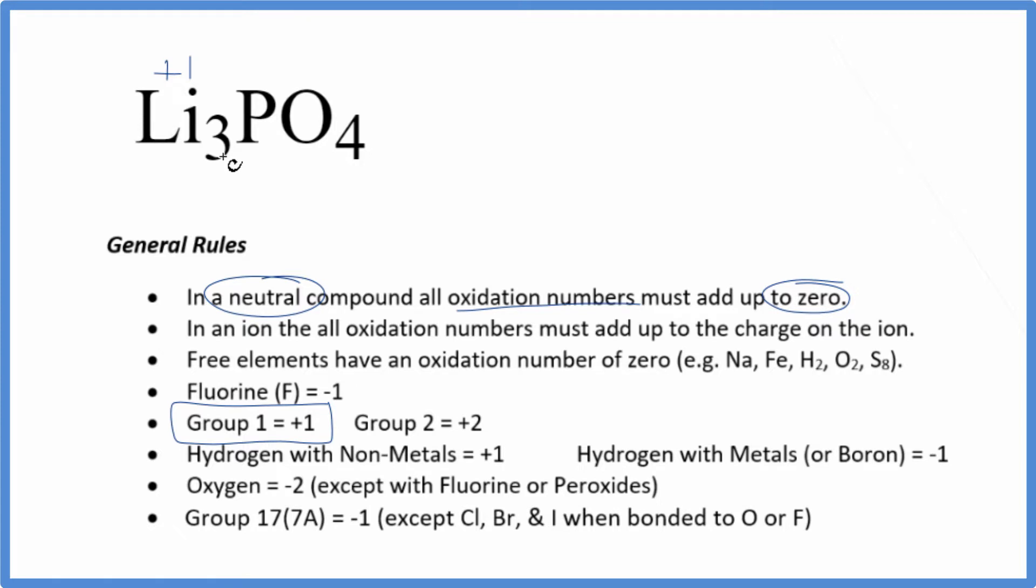The phosphorus, we can't determine just from these rules, so let's call that X. But oxygen is almost always minus two, with a few exceptions. So each of these four oxygens has an oxidation number of minus two.